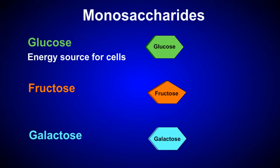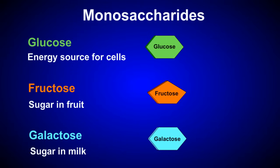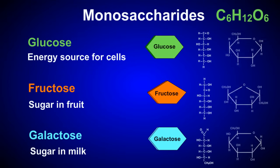Fructose is the primary monosaccharide found in fruits and plants, and galactose is the primary monosaccharide found in milk. All of these monosaccharides are six carbon sugars with the chemical formula C6H12O6. They can be depicted chemically as either straight chains or rings.